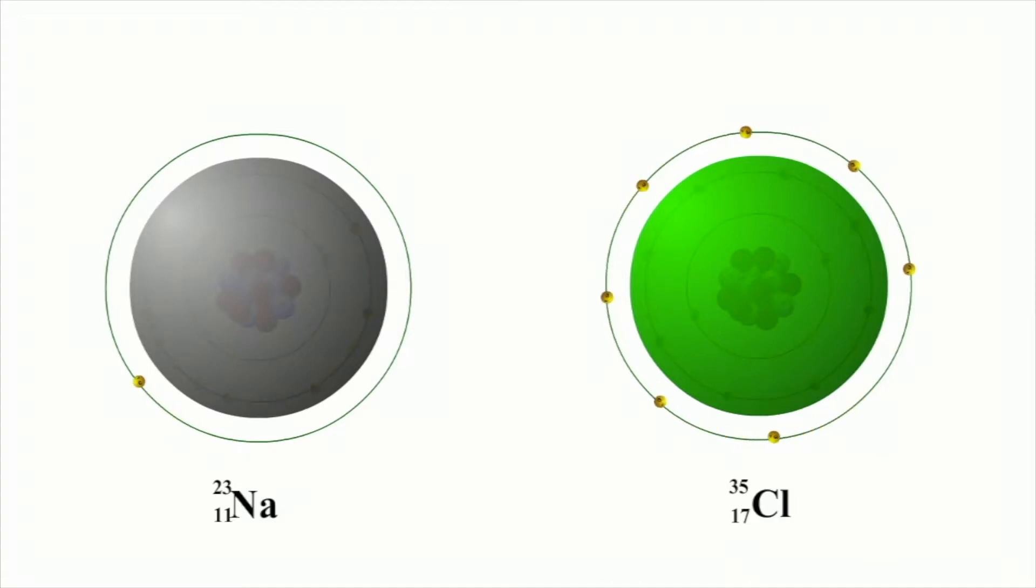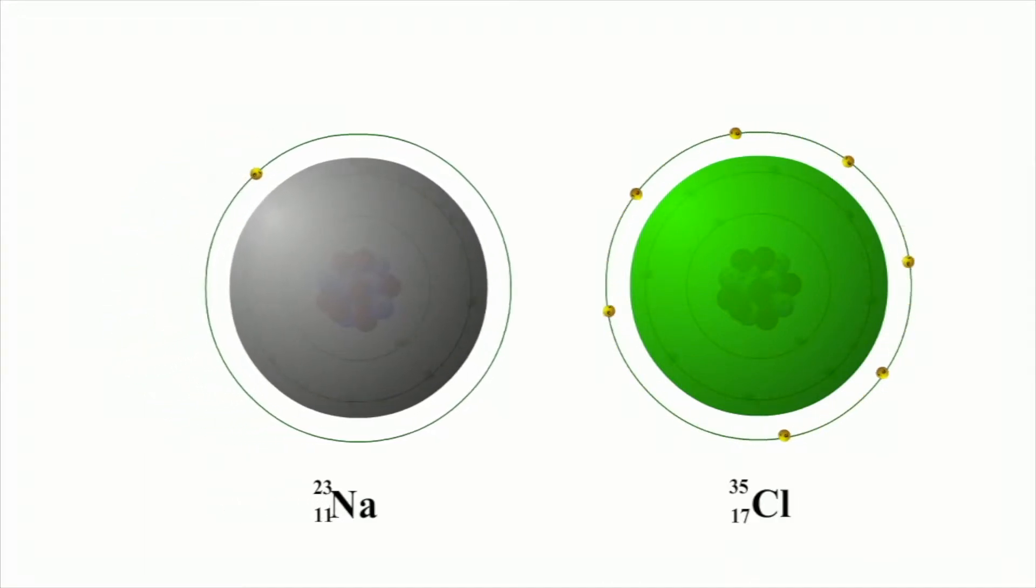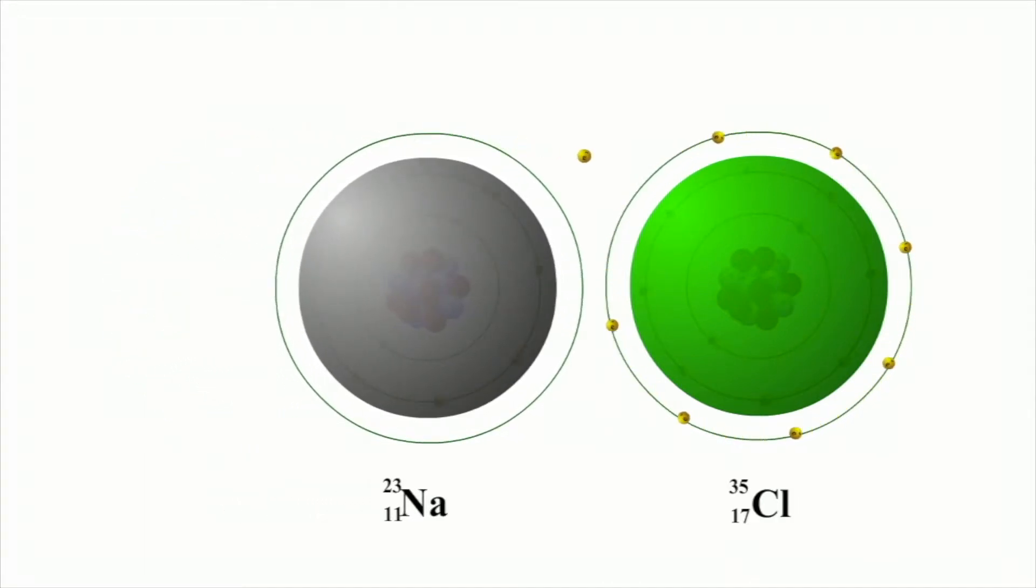Sodium donates its electron to chlorine. The reaction creates a stable molecule of sodium chloride or table salt.